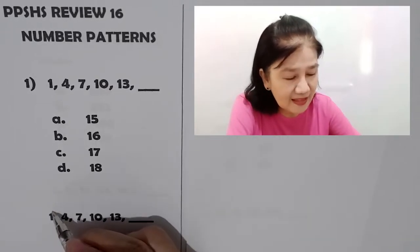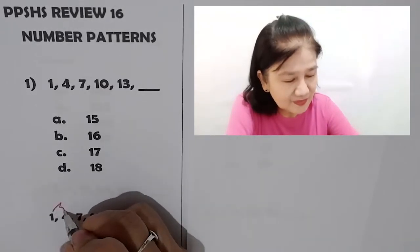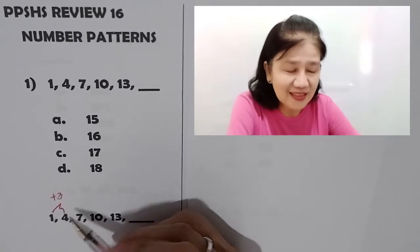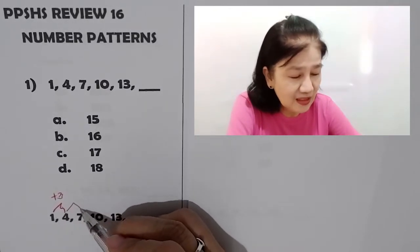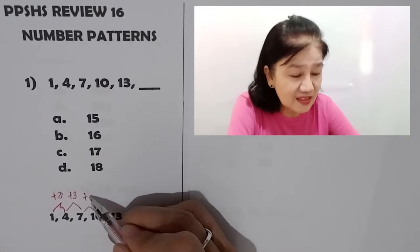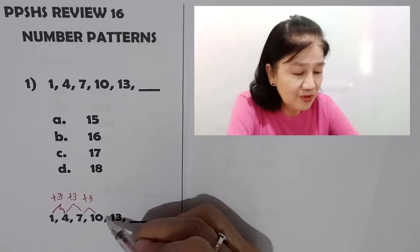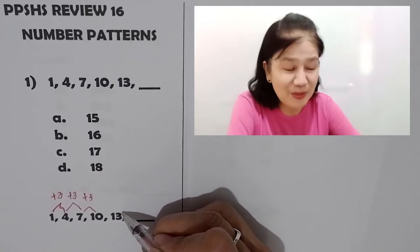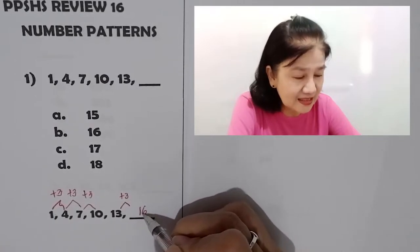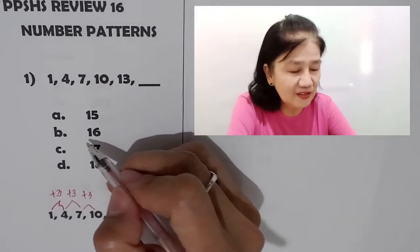So, you see that you will add 3. So this is plus 3. 1 plus 3 is 4. Then, 4 plus 3 is 7. 7 plus 3 is 10. So, you can skip that because you're under time pressure. So, 13 plus 3 gives you 16. So, the answer is letter B.